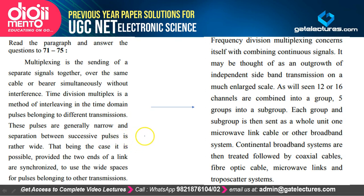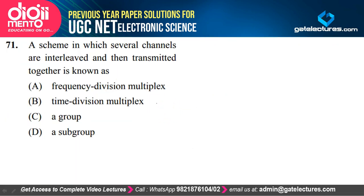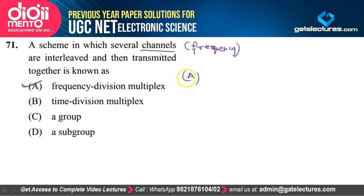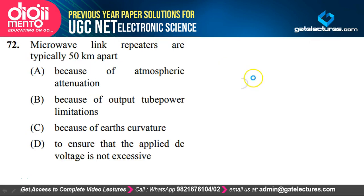The following questions are based on a paragraph. A scheme in which several channels are interleaved and then transmitted together is known as frequency division multiplexing (FDM) — option A is correct.